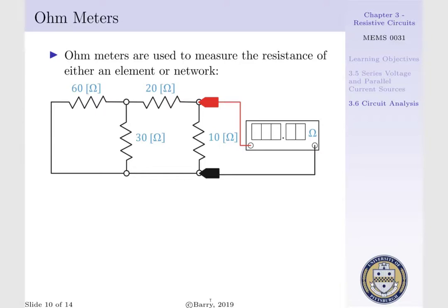Ohmmeters are typically built into multimeters and allow us to measure the resistance of either an element or a network.